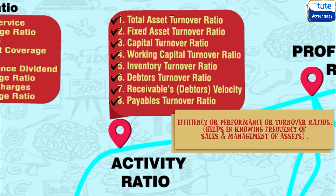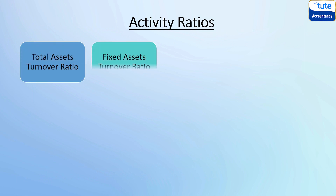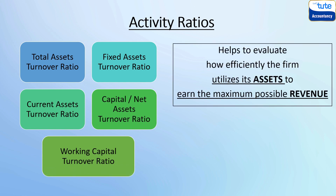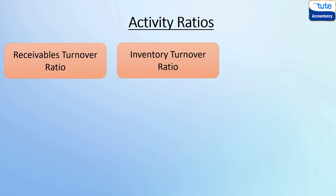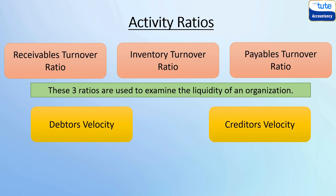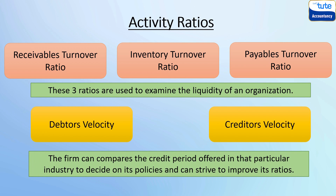Finally, friends, here we are done with all the activity ratios. We studied various turnover ratios like total assets, fixed assets, current assets, capital and working capital turnover ratios. These ratios help us to evaluate how efficiently a firm utilizes its assets to earn the maximum possible revenue, and that is the reason they are also known as efficiency or performance or turnover ratios. Further, we studied inventory, receivable and payable turnover ratios which are relevant to examine the liquidity of an organisation. Understanding the average collection period, that is debtors' velocity, and average payment period, that is creditors' velocity, help us to evaluate and compare the credit period the firm receives from the supplier with the credit period it offers to its customer. The firm can also compare the credit period offered in that particular industry to decide on its policy and can strive to improve its ratio by increasing its operational efficiency and business performance.